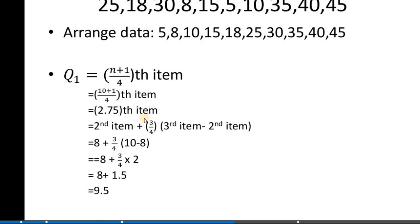The answer is the 2.75th item, which means the 2nd item plus (3/4) times (3rd item minus 2nd item). So: 8 plus (3/4) into (10 minus 8), giving 8 plus (3/4) into 2, which equals 8 plus 1.5. The answer is 9.5.